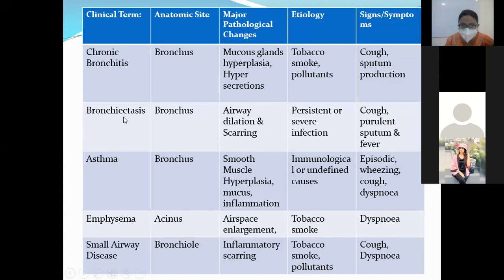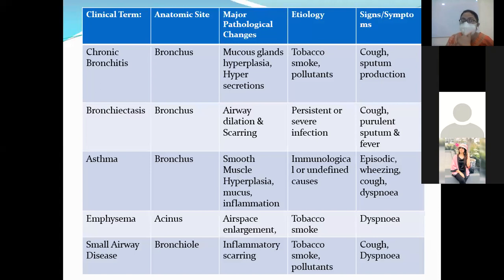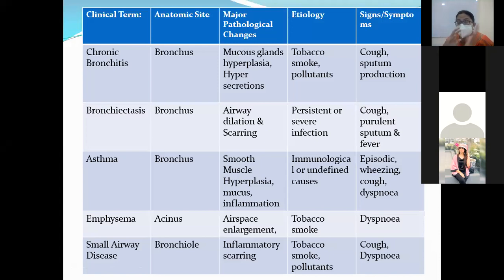Bronchiectasis anatomically involves the bronchus and is associated with dilatation and scarring. It is associated with persistent or severe infection — keep in mind that infection is a clue of bronchiectasis. The symptoms of bronchiectasis are cough, purulent sputum, and fever. If fever and infection are present, you must know it may be associated with bronchiectasis.